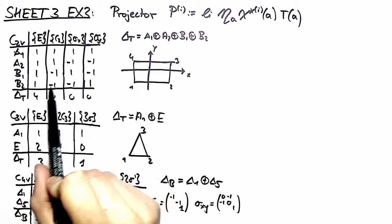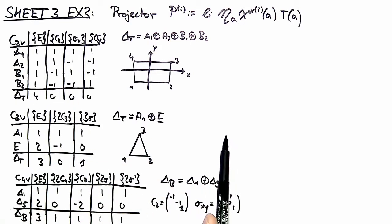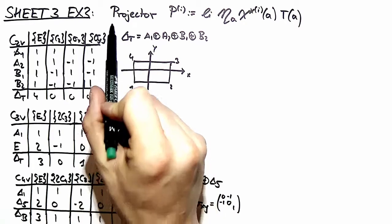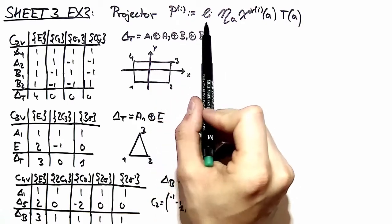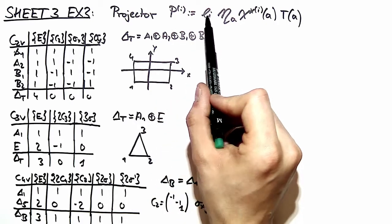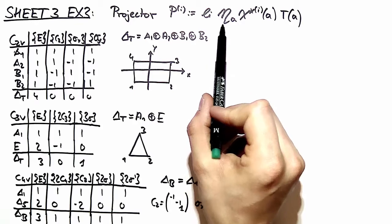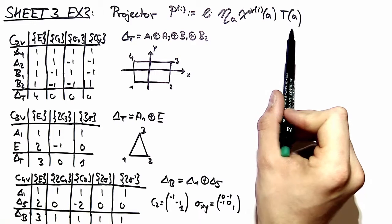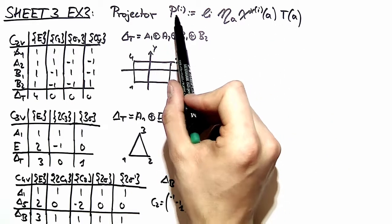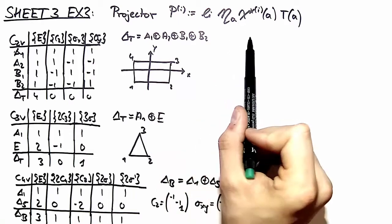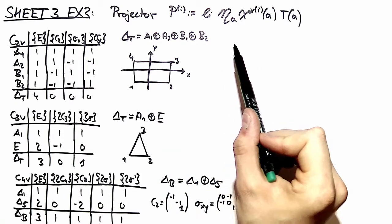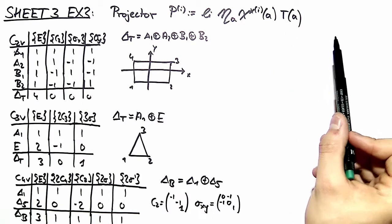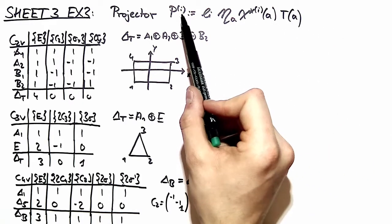This should be nothing new to you because this is thoroughly discussed in exercise sheet number two. The only thing new is the projector operator defined as in the lecture. We take the dimension of the irreducible representation times the average over the character times the symmetry operation, and when we act with this operator onto a trial vector which we can choose arbitrarily, we end up with a vector which transforms according to the i-th irreducible representation.